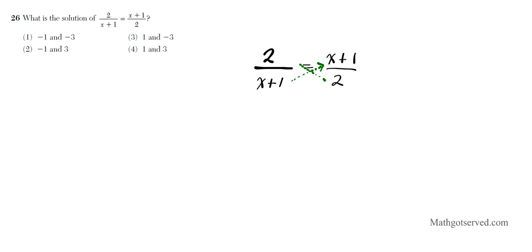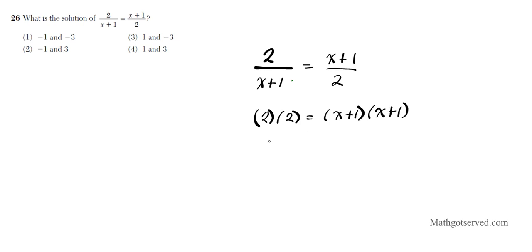When I cross multiply, I end up with the equation: 2 times 2 equals (x+1) times (x+1). Multiplying the left side gives 4. On the right side, I'll use FOIL — first, outer, inner, last — and I get x squared plus x plus x plus 1.